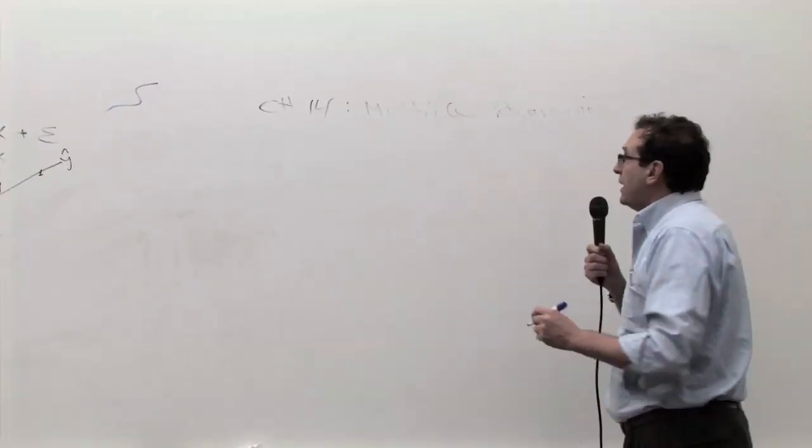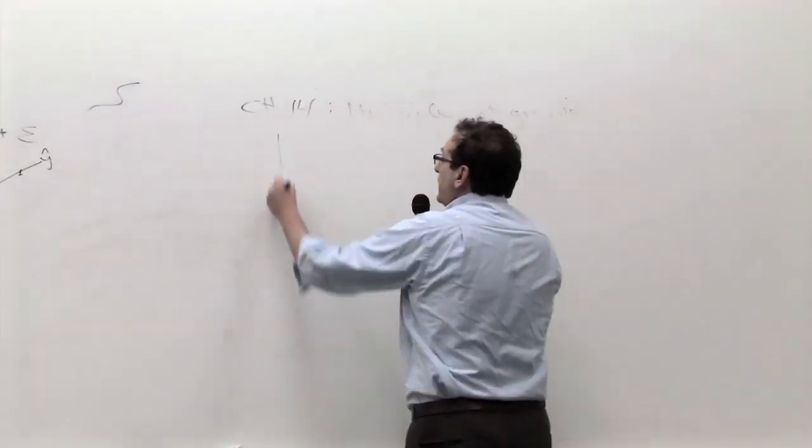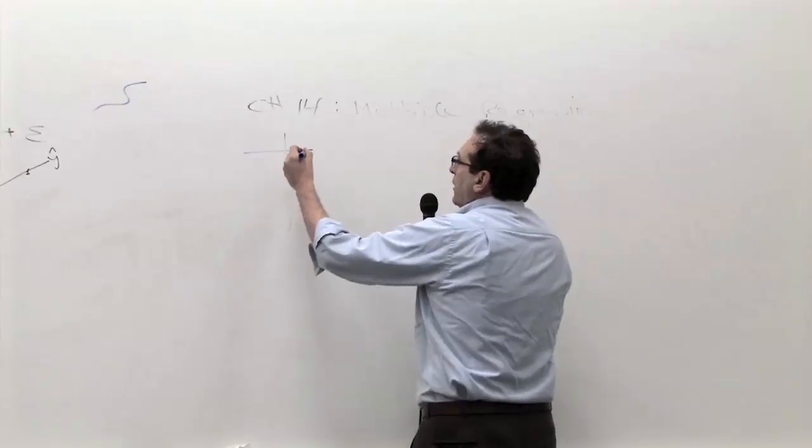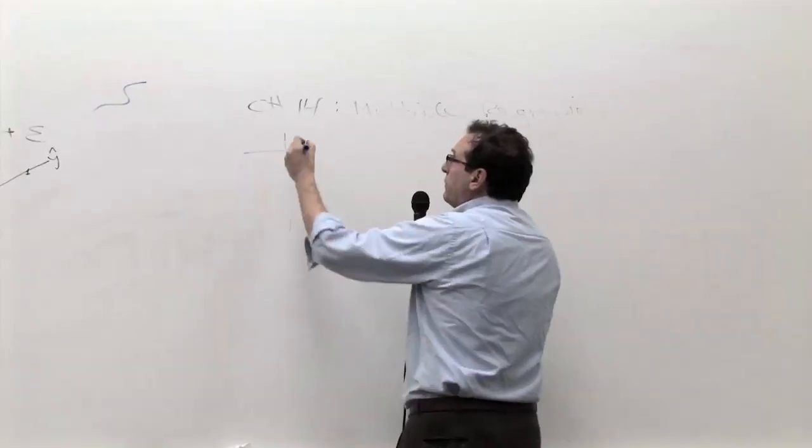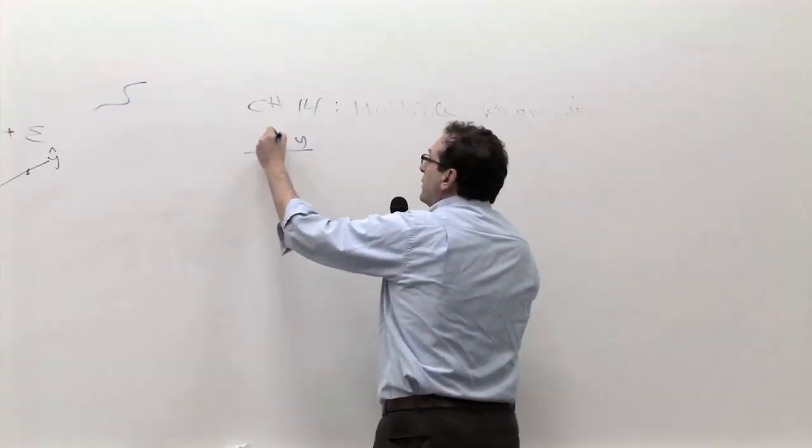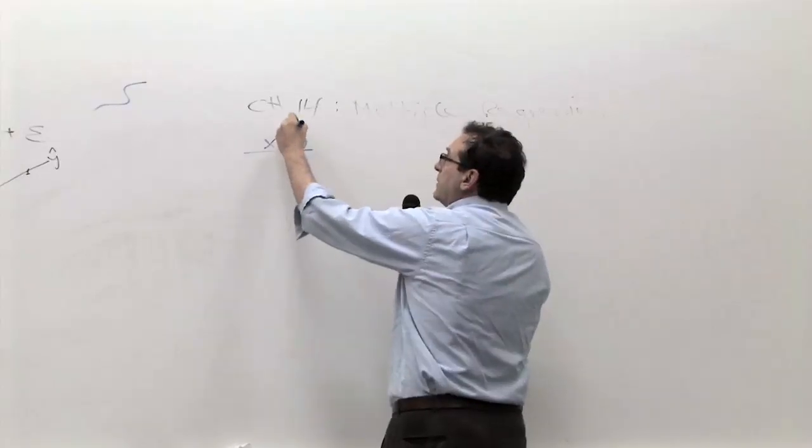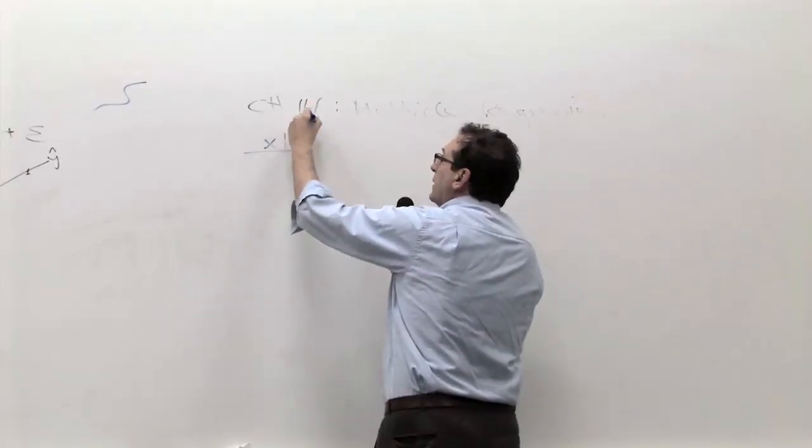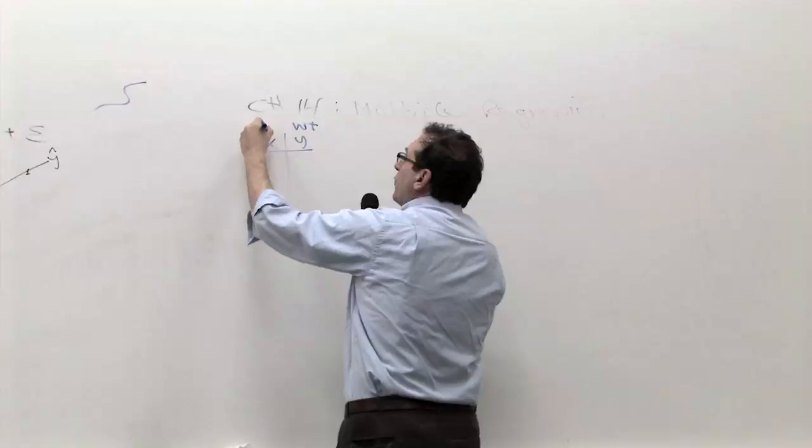This is called multiple regression, and basically what we did in chapter 13, which is called simple unit, we had a single y value, somebody's weight, and we had somebody's height trying to predict their weight.